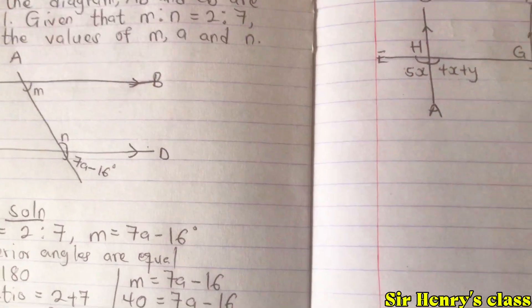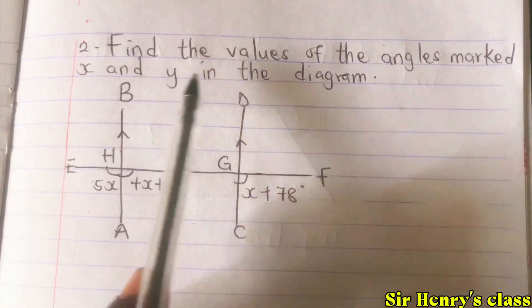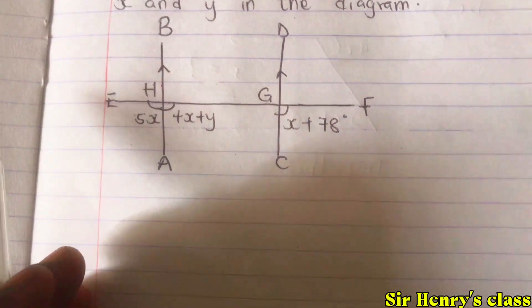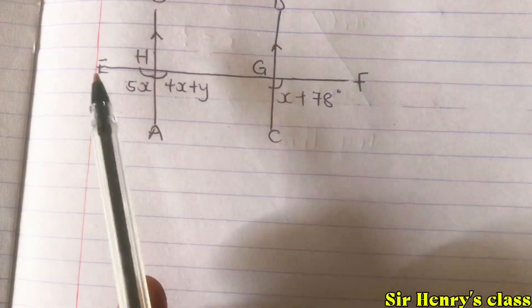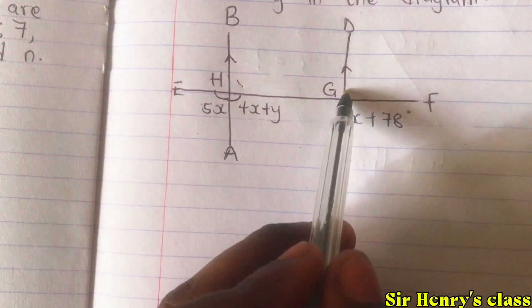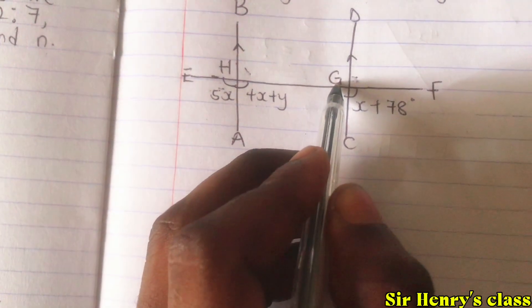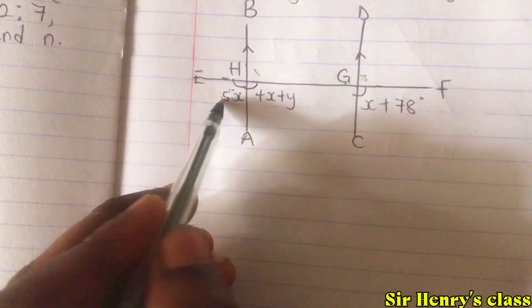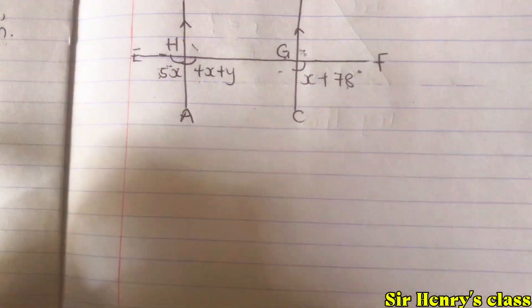Let's move to the second question. Find the values of the angles marked x and y in the diagram. We have to find x and y. We can apply corresponding angles and alternate angles — we can rotate the diagram to resemble the first question. The angle here corresponds to the one there, and 5x corresponds to the angle created here; 4x plus y corresponds to x plus 78 degrees.